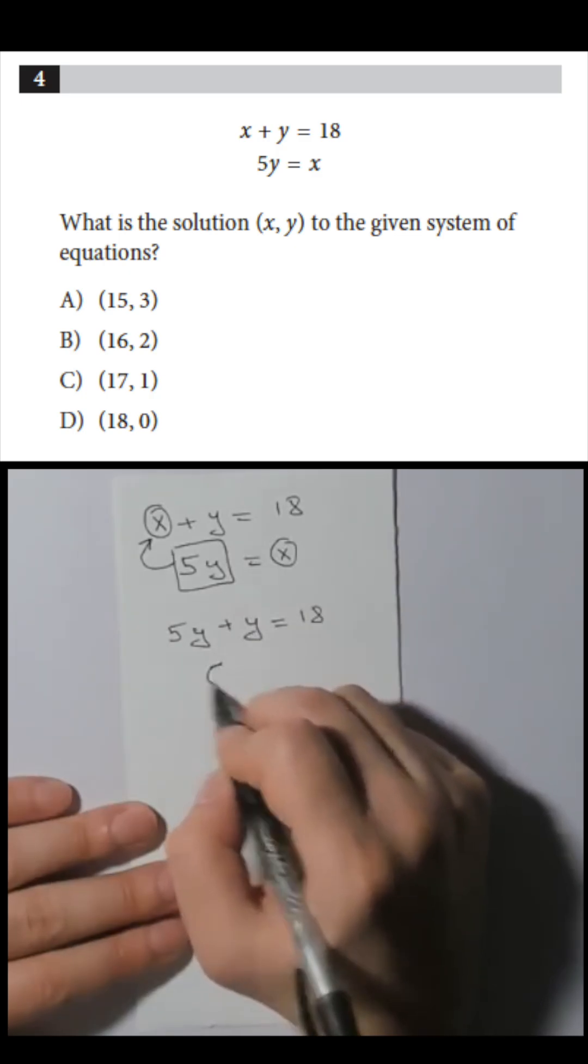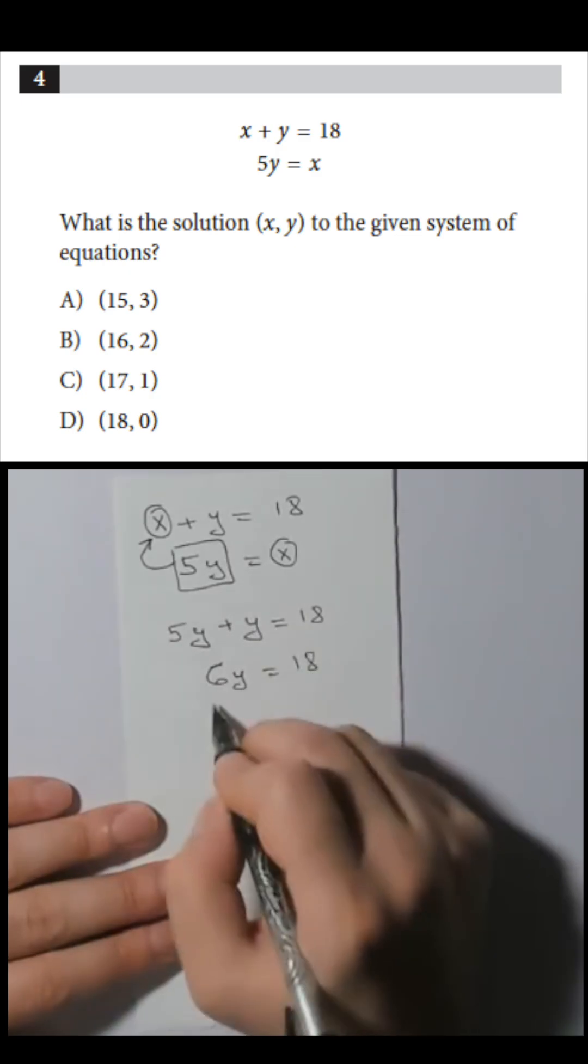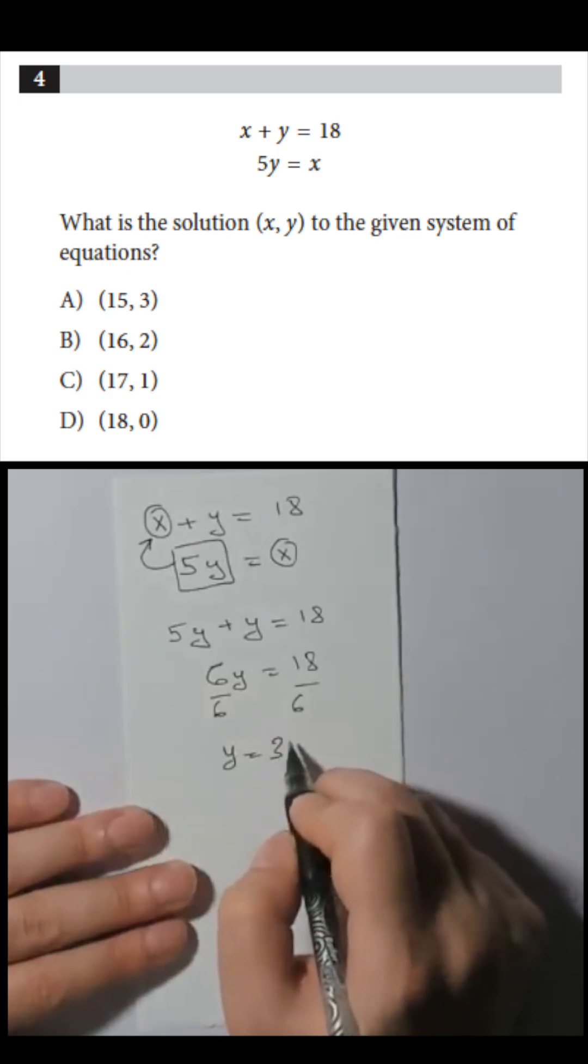So 6y equals 18. Divide both sides by 6 and we get y equals 3.